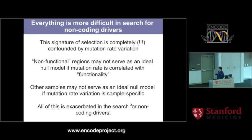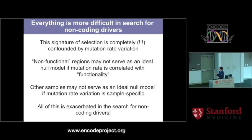One idea is to look at mutations in non-functional neutral regions as a control, build a model, and apply it to the functional site — contrasting functional and non-functional regions. However, if mutation rate variation is correlated with functionality, this would not work, because mutation rate variation would completely confound the inference. Another idea is to take a very large number of samples, look at a specific subset of patients, and observe whether mutations don't conform to a model learned on other patients. This would not work well if mutation rate variation is sample-specific. I'd argue both of these issues are present, posing a fundamental problem for statistical methods.